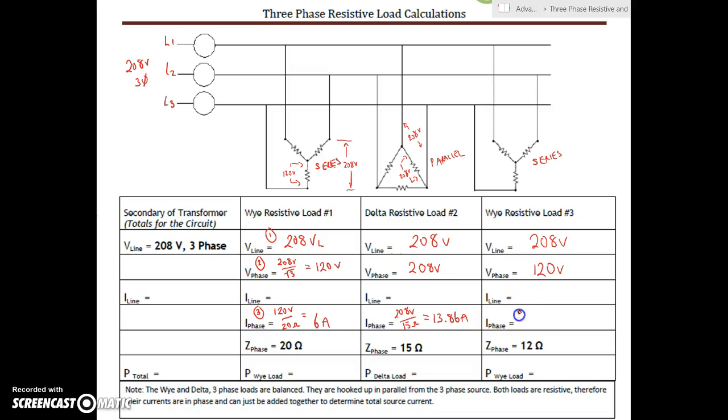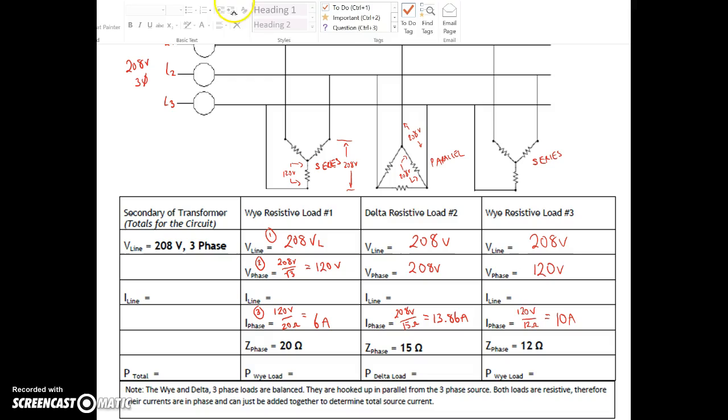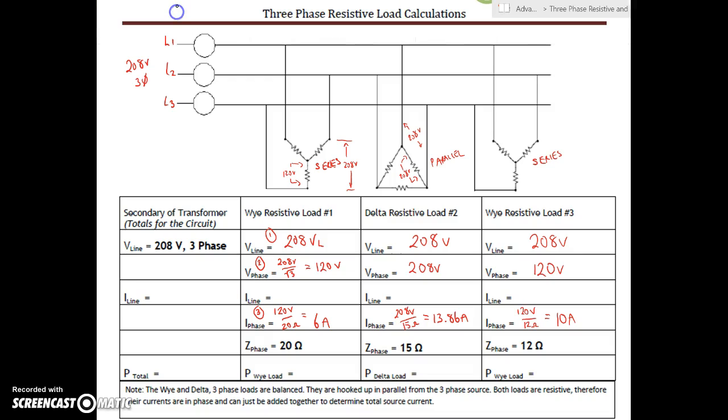Each of these are balanced circuits, so each of those resistors is 15 ohms. So we now have 208 volts over 15 ohms, that gives you 13.86 amps. Next one we've got is 120 volts divided by 12 ohms, and that's obviously going to give us 10 amps. Now we're keeping track of all of our currents there. So inside this guy, we've got 10 amps on the phase.